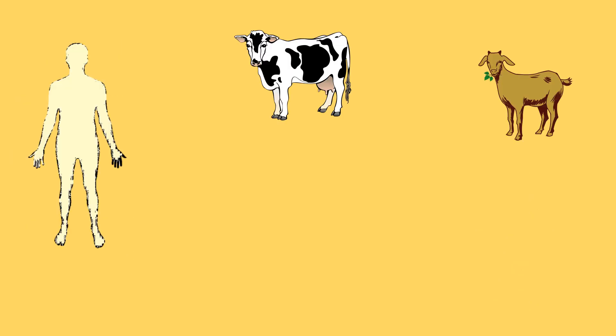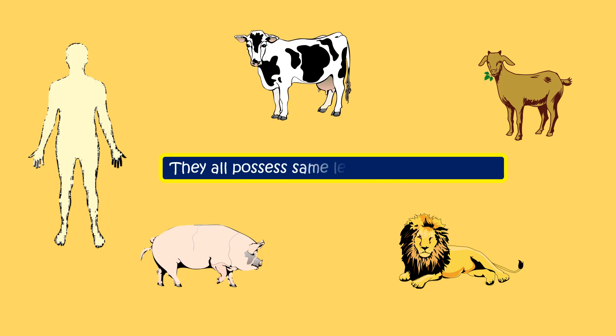Multicellular organisms may vary greatly in their size and shape. However, they all possess the same levels of organization.